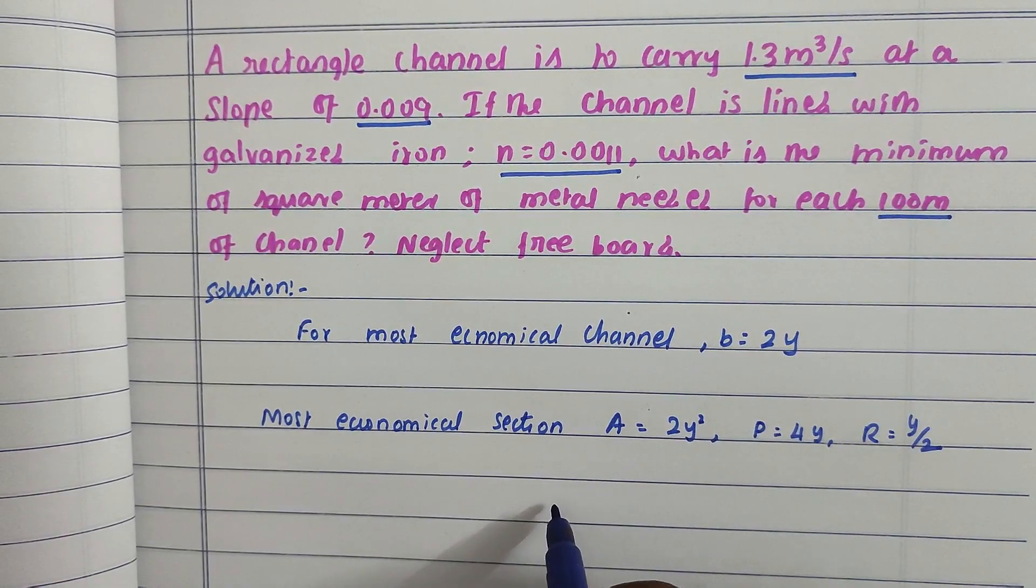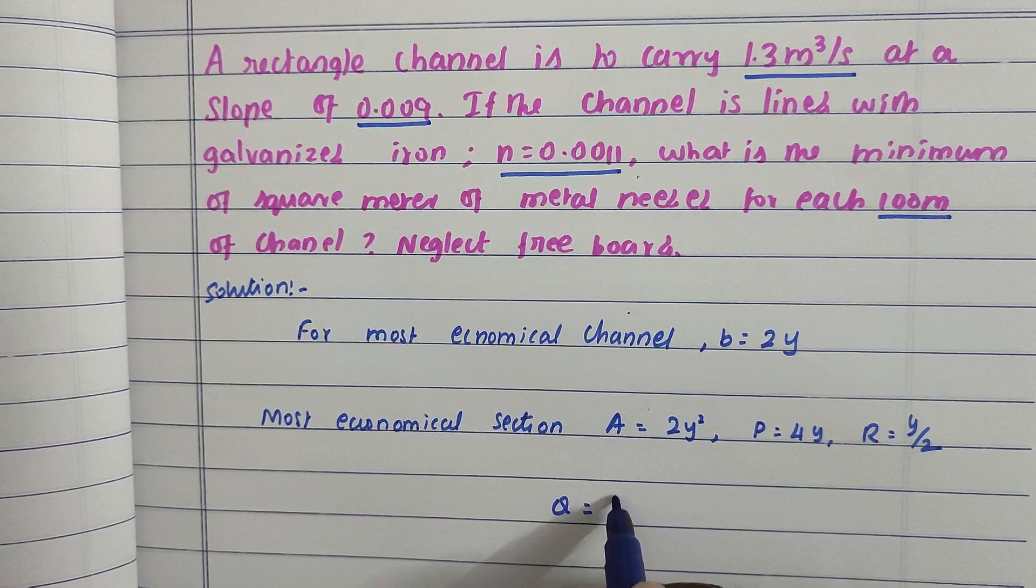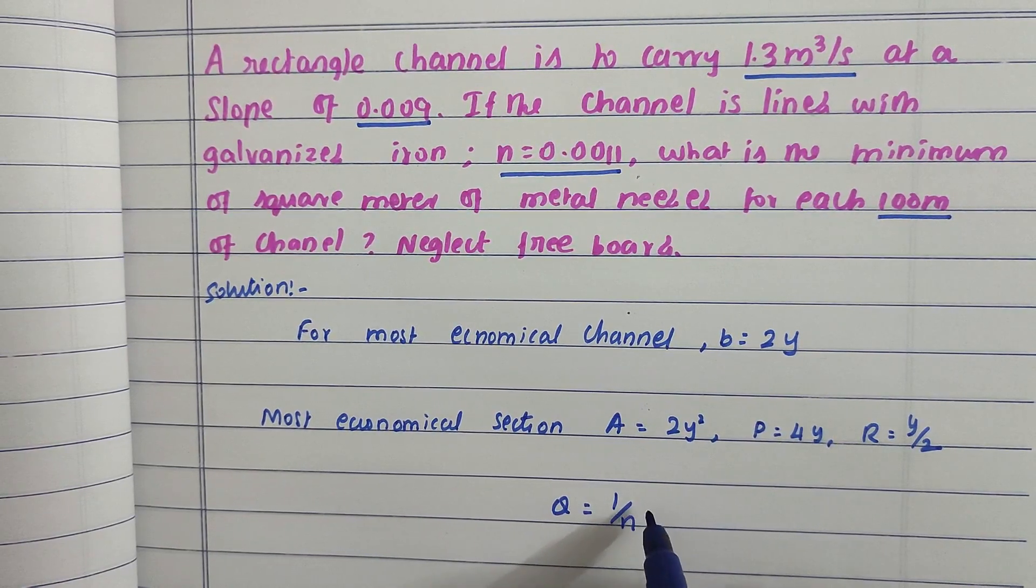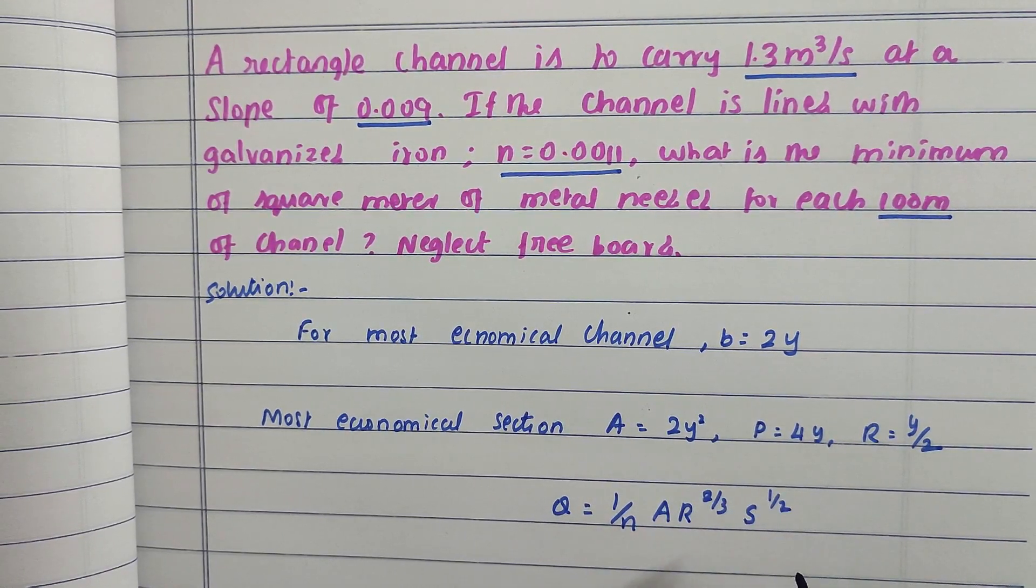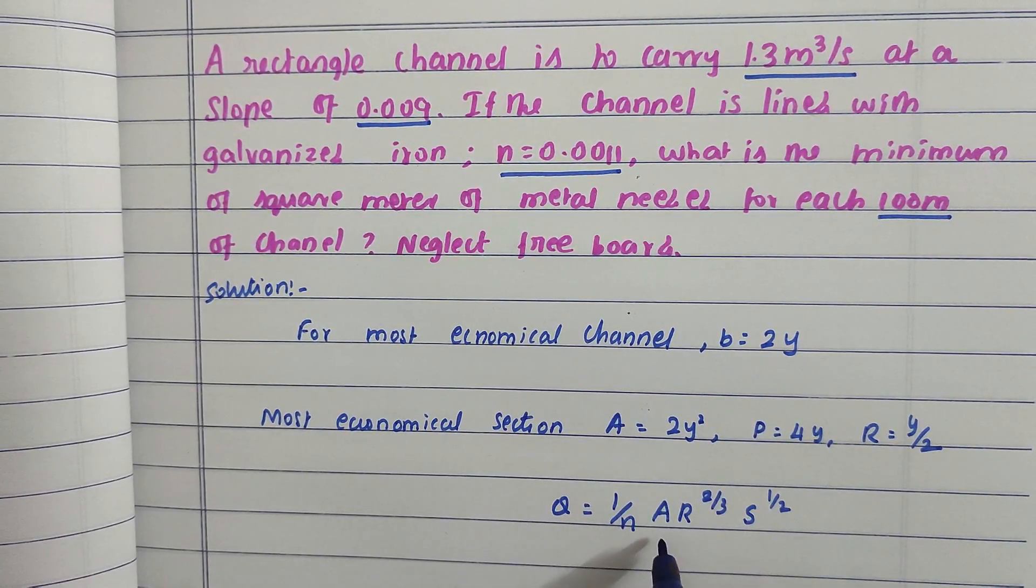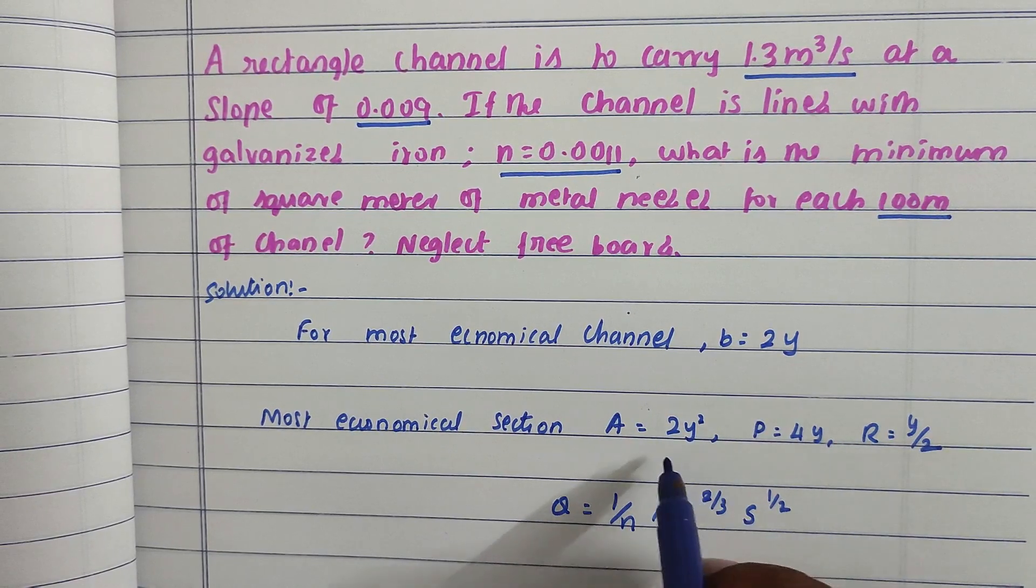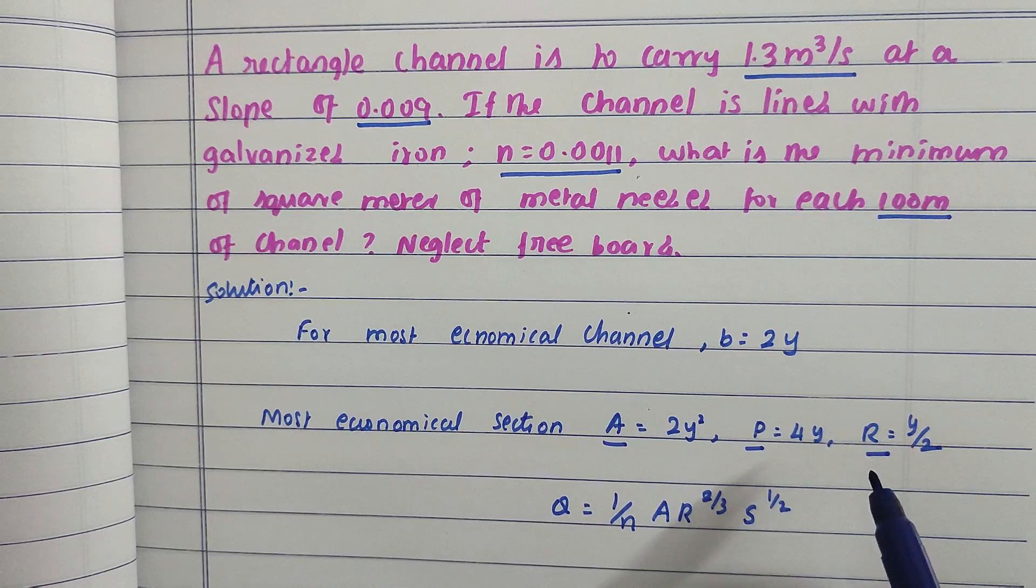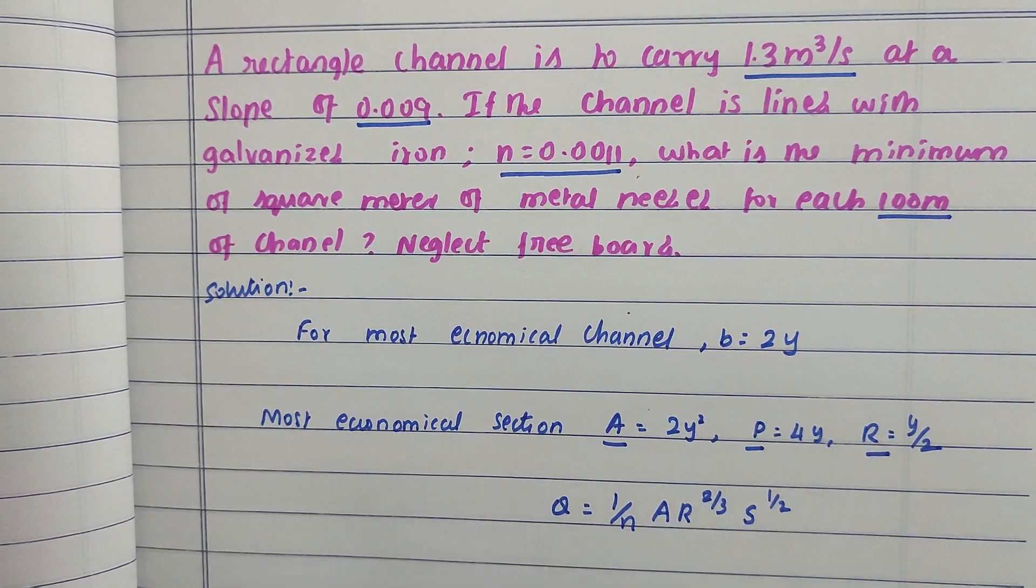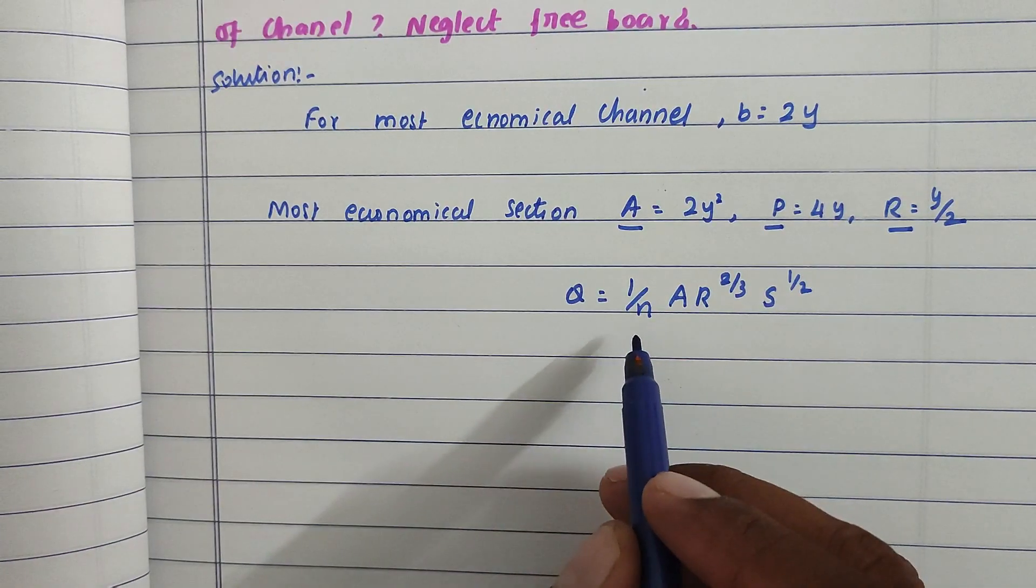The formula is Q equals 1 by n times A times R to the power 2 by 3 times S to the power 1 by 2, where Q is discharge. We need to substitute all the values to find out A, P, and R values.